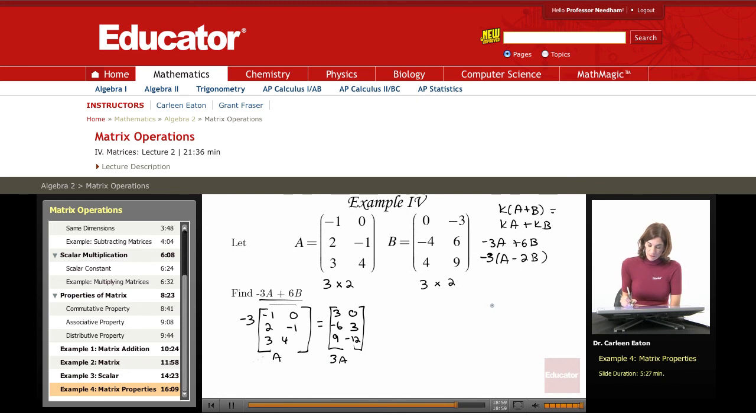So I have B over here: 0, negative 3, negative 4, 6, 4, and 9. So I have B. I'm going to multiply it by 6, and that's going to give me 6B.